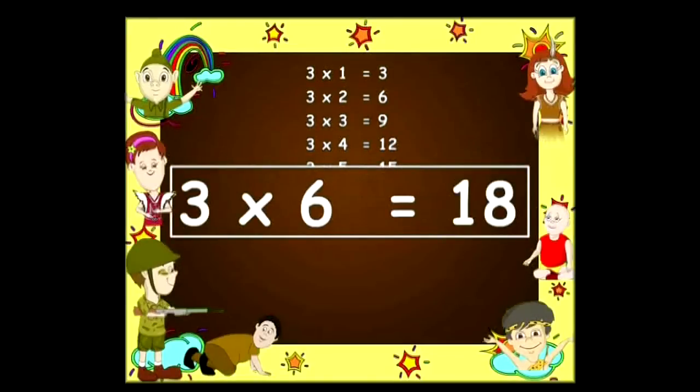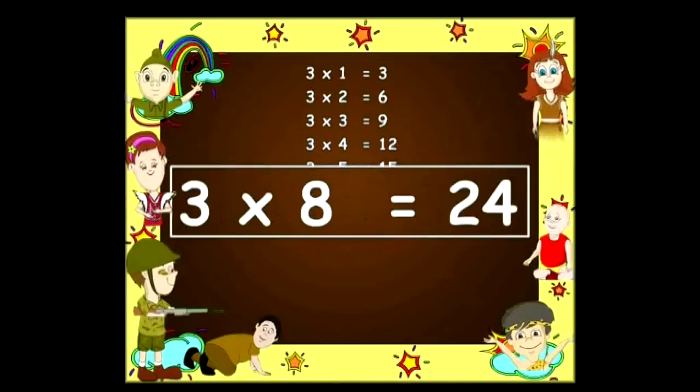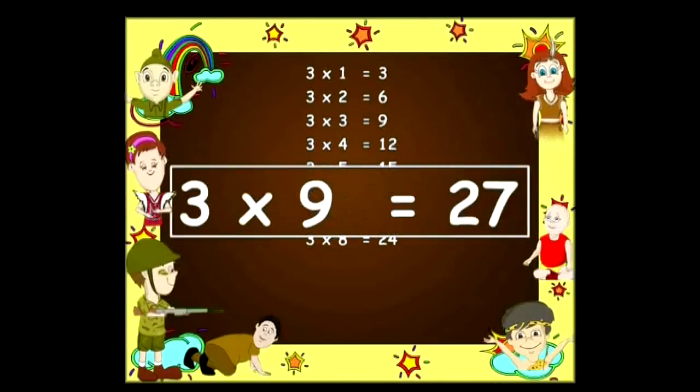Three fives are fifteen, three sixes are eighteen, three sevens are twenty-one, and three eights are twenty-four.